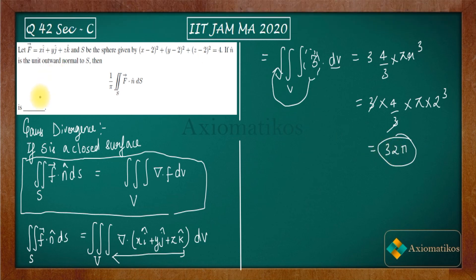So this is why we got 32 pi as your answer. So your answer will be 32 pi. Thank you.